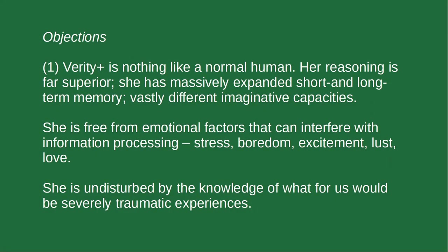It's time to turn to some objections to Railton's position. I've talked about some of the general objections to moral naturalism in previous videos, so here I'm just going to focus on problems specific to Railton's naturalism. Railton's account of morality depends on his account of non-moral goodness, which involved constructing an idealised agent — perfectly rational and fully informed of all the relevant facts about the real agent — and asking what the idealised agent would want to want if she were in the real agent's shoes.